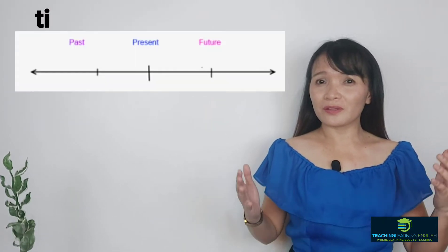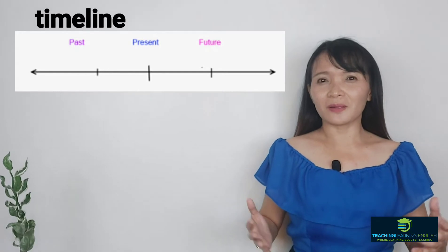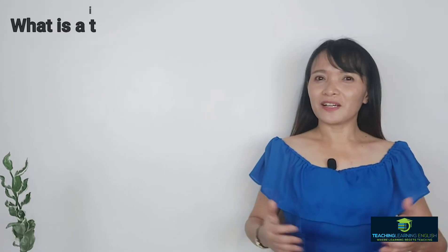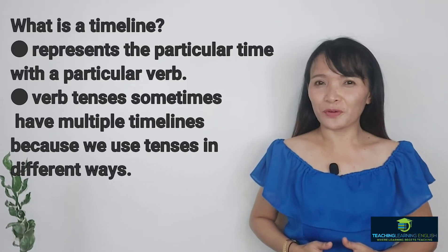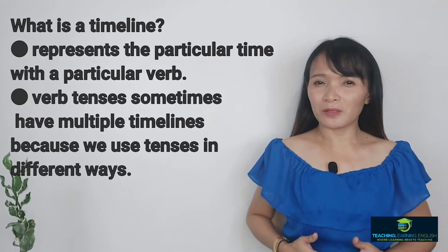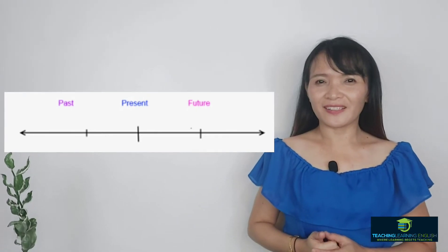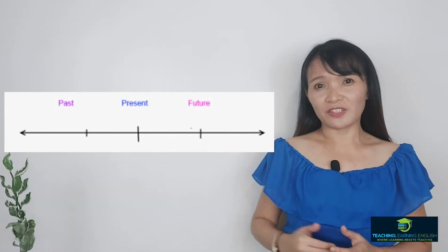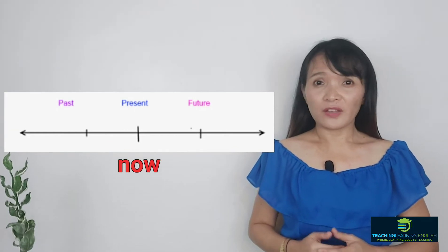There are many uses of present tense and to further illustrate this, I will use a timeline. I guess most of you have a Facebook account and we always see a timeline — we can use a timeline in verb tenses. A timeline is how we represent a particular time with a particular verb tense. Remember that in verb tenses, we sometimes have multiple timelines because we use tenses in many different ways. Look at this diagram. Looking at this horizontal line, the center is now, on the left is past, and on the right side is the future.